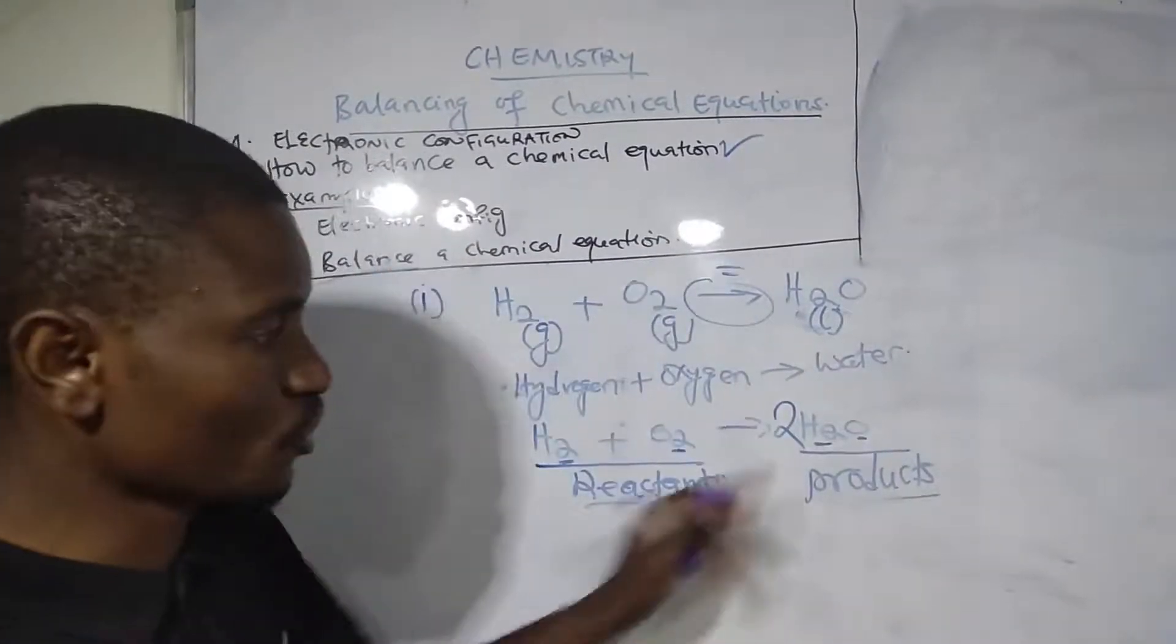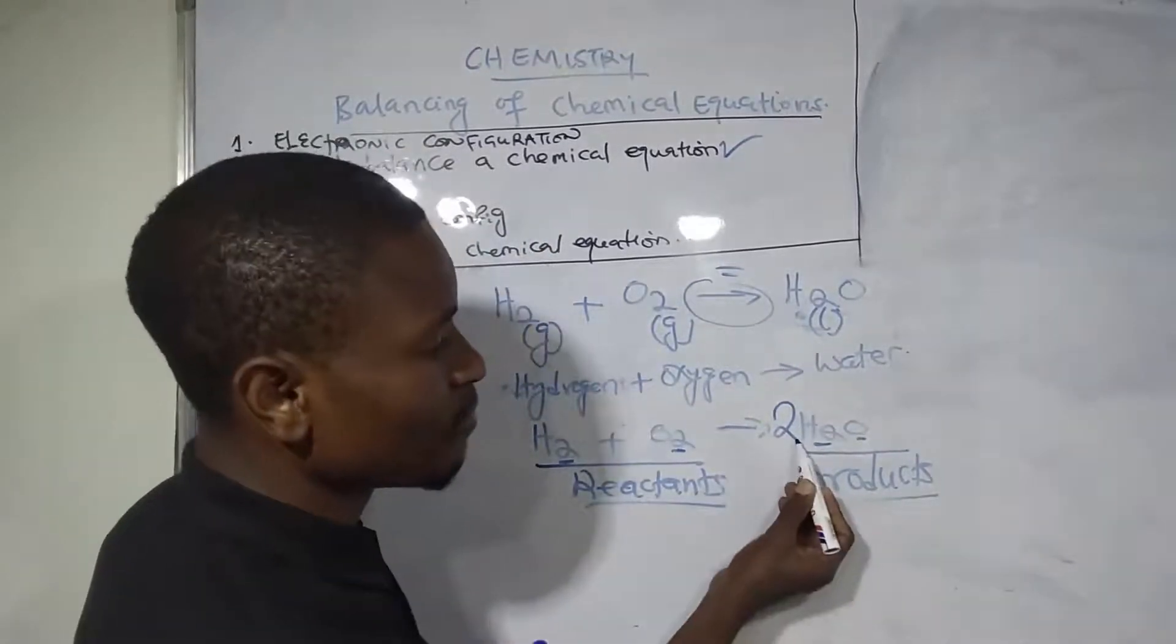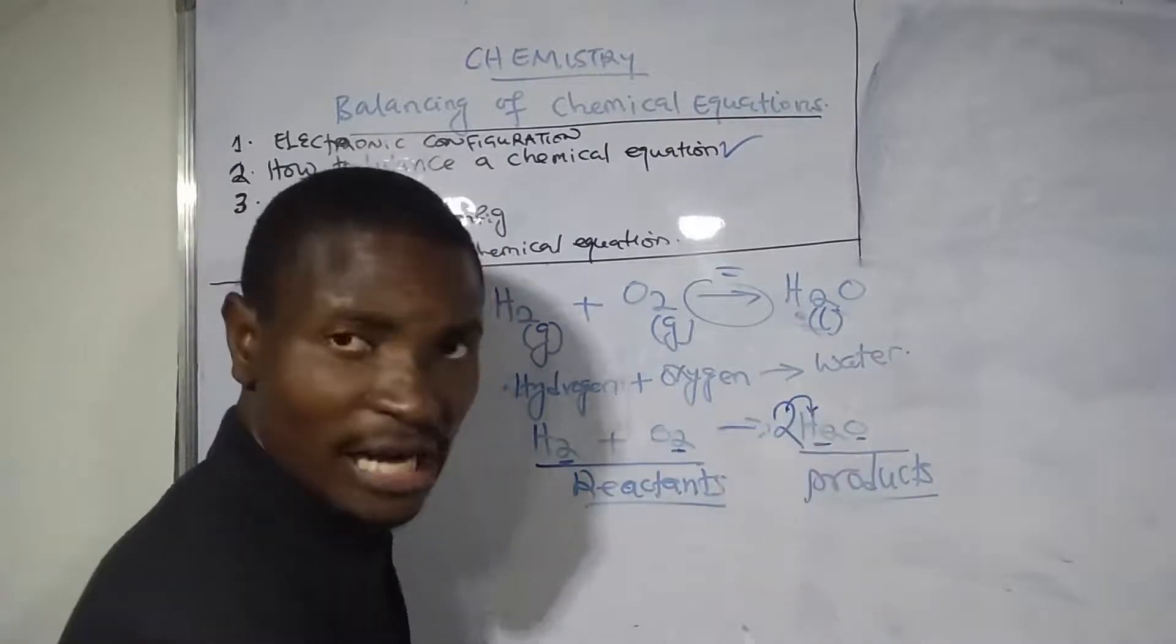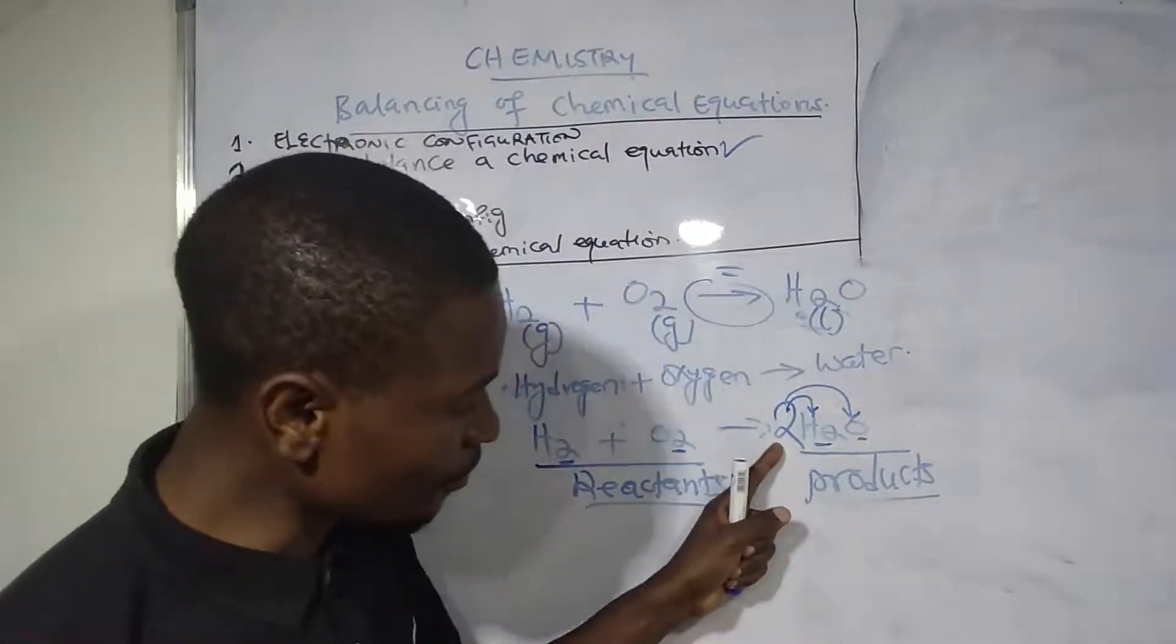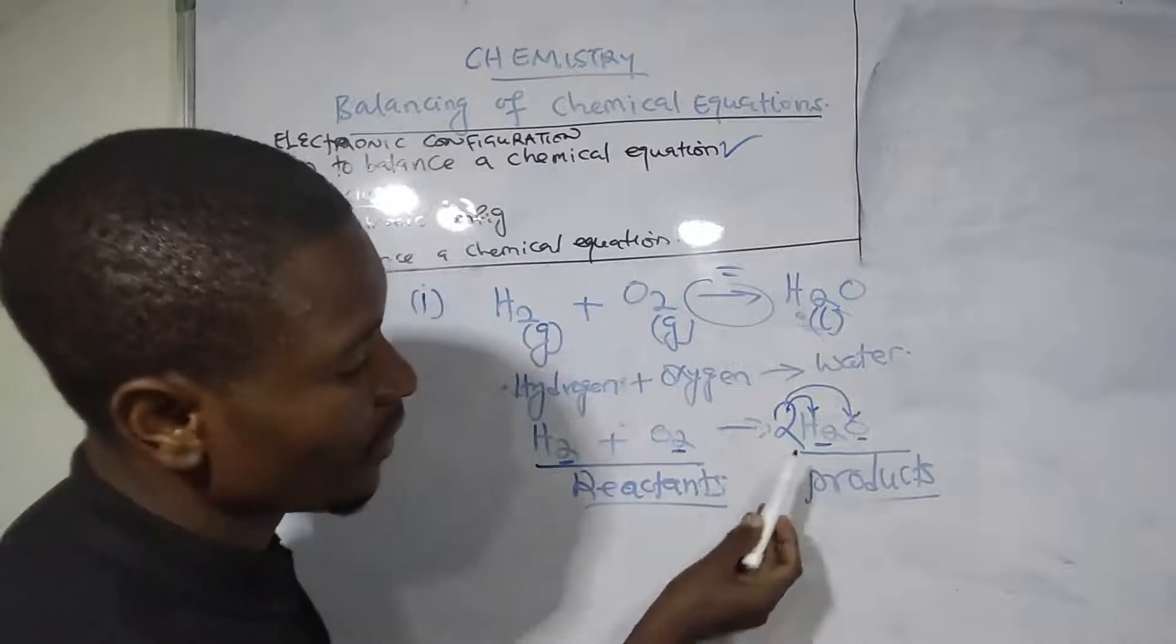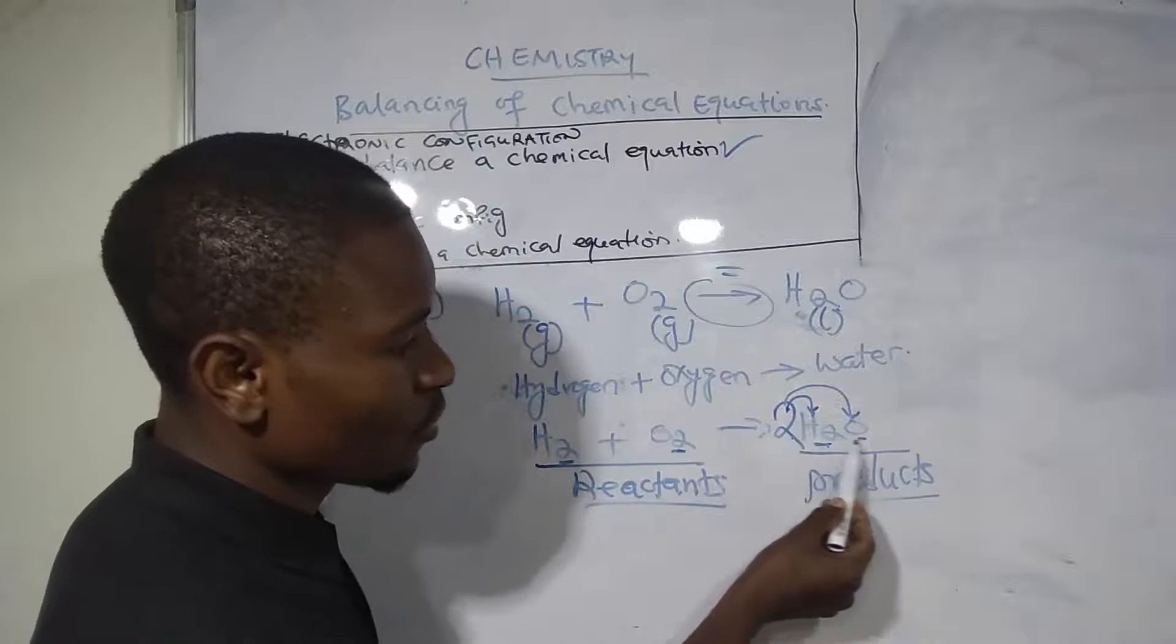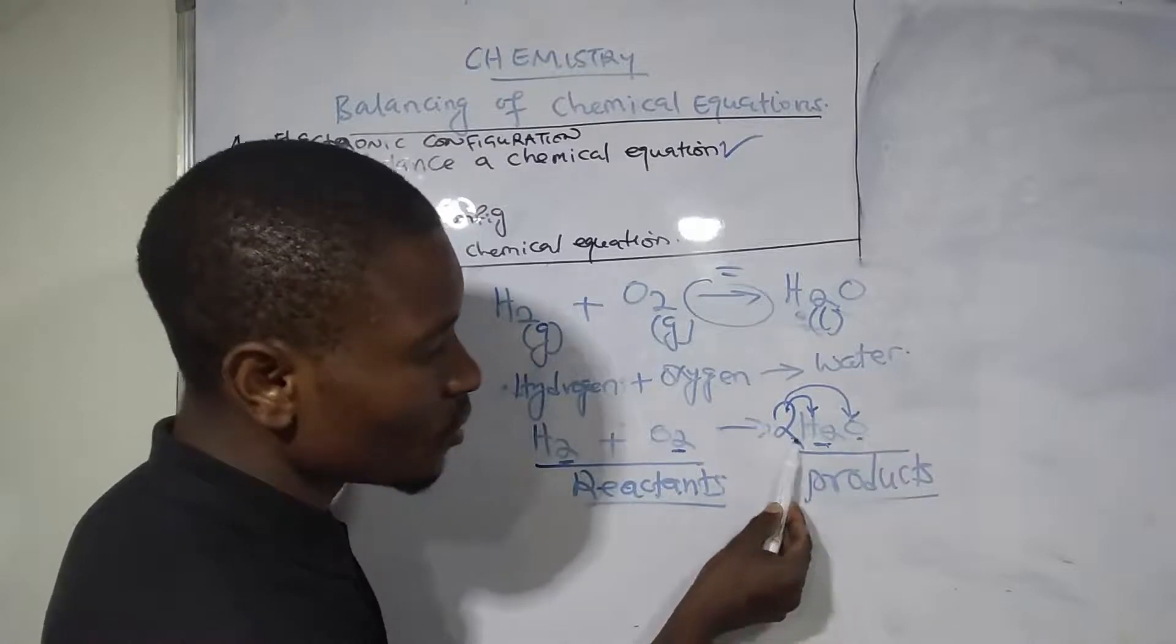In a simple way, I will write 2. You put 2 there, but be careful - this 2 will affect whatever elements are in that compound. This 2 represents both hydrogen and oxygen at the same time. When calculating, the 2 affects whatever element is there.